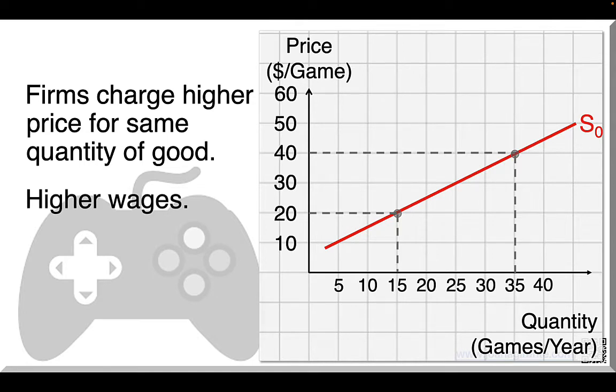Suppose there's a shortage of good programmers, so wages are on the rise. A tough decision's on the horizon for game makers. Either they take the hit and reduce profit margins, or they try to pass the cost on to consumers. After all, bankrupt firms create no games. Let's say game makers figured out that $10 per game is all they need to keep their profit margin.